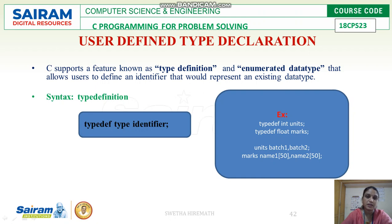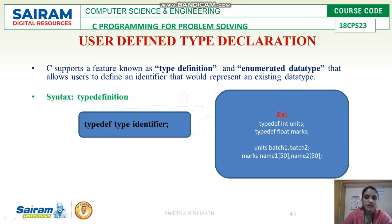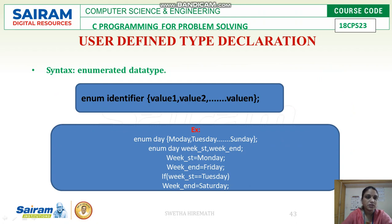Coming to user-defined type declarations, we have two types: type definition and enumerated data types. Type definition uses the keyword 'typedef' followed by the primary data type and the identifier name. For example, 'typedef int units' — from now onwards, instead of using 'int', we can use 'units' to declare integer variables. Similarly, 'marks' can be defined as float data type and used to declare float variables.